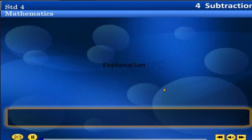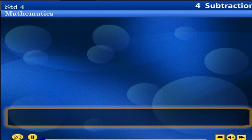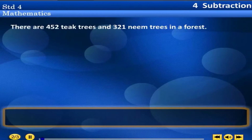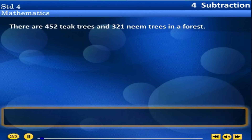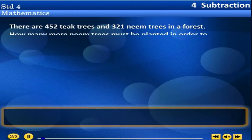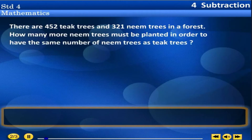Lesson number 4, Explanation Revision 1. There are 452 teak trees and 321 neem trees in a forest. How many more neem trees must be planted in order to have the same number of neem trees as teak trees?